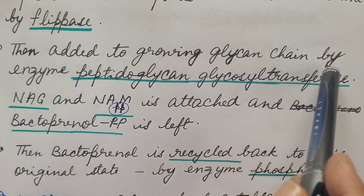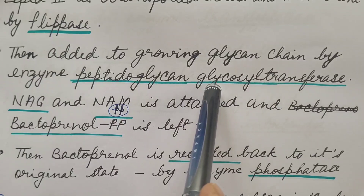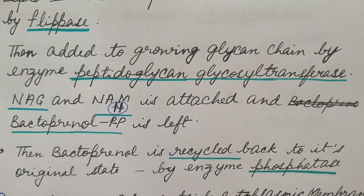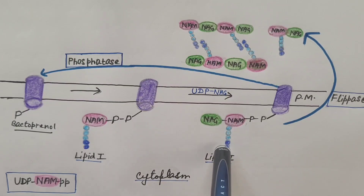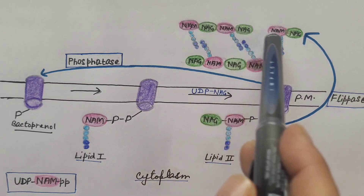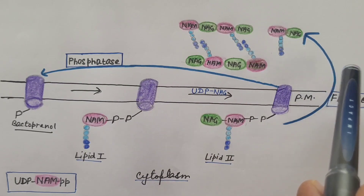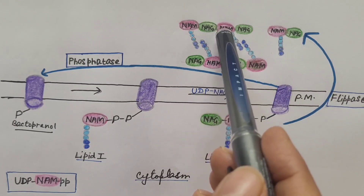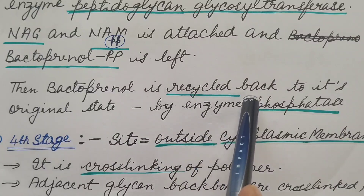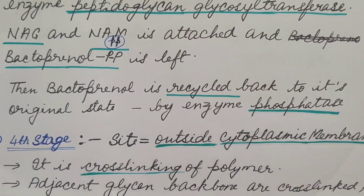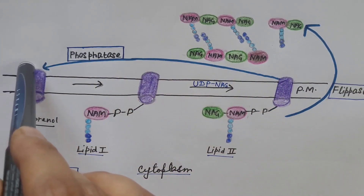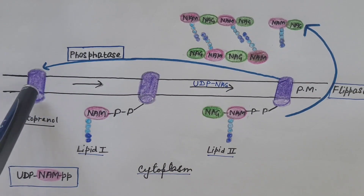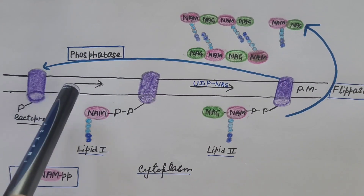After flipping, the NAM pentapeptide and NAG from Lipid II are added to the growing glycan chain by the enzyme peptidoglycan glycosyltransferase, and bactoprenol pyrophosphate (bactoprenol-PP) is displaced. Bactoprenol is then recycled back to its original state by the enzyme phosphatase, which removes the phosphate group. This recycling is critical because bacteria have a limited supply of bactoprenol.